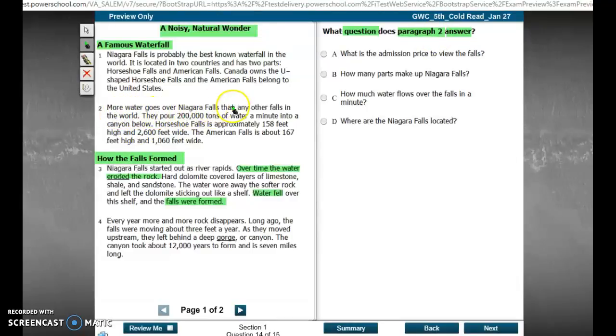More water goes over Niagara Falls than any other falls in the world. They pour 200,000 tons of water a minute into a canyon below. Well, I see that and I remember that from my questions. Horseshoe Falls is approximately 158 feet high and 2,600 feet wide. The American Falls is about 167 feet high and 1,060 feet wide. So let's see, can we answer any of these questions here?